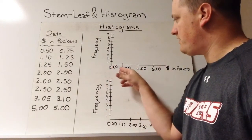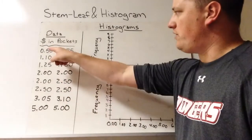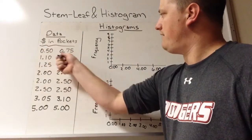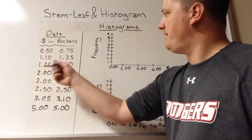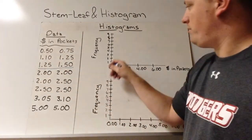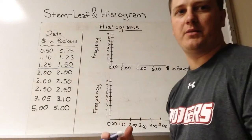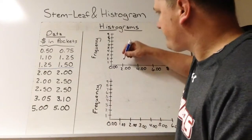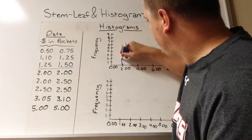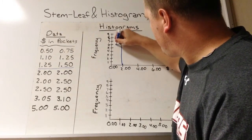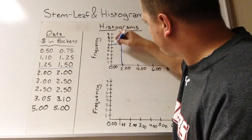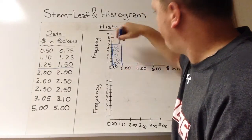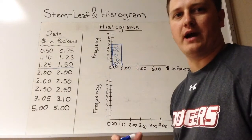So for the zero to a dollar ninety-nine bin, we count: one, two, three, four, five, six — these six data points go in this first bin because they're between zero and two dollars. So we need to draw the bar up to six.